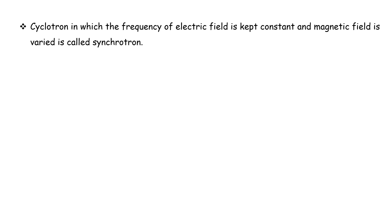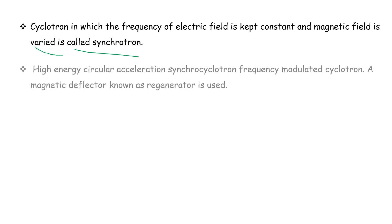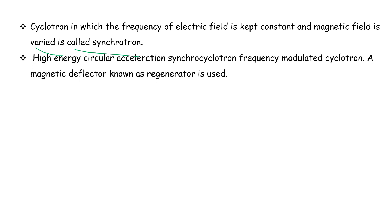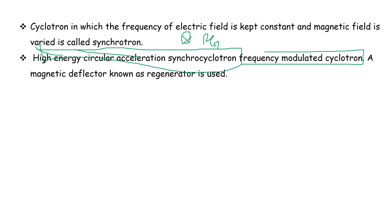The synchrocyclotron is used for high energy circular acceleration. In the synchrocyclotron, the magnetic field is varied. This is an important distinction from the standard cyclotron.